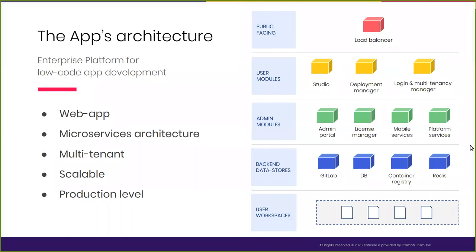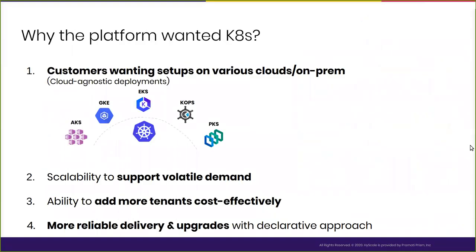The application itself was an enterprise platform — a low-code development platform where users would sign up in order to build out applications in an easier way. As you can see, this is a picture of the kind of services that were there. It had service discovery, a load balancer, stateful services, and so on. They wanted to move to Kubernetes because a lot of their customers were on different clouds, and they wanted this platform to be set up for them on the cloud of their choice.